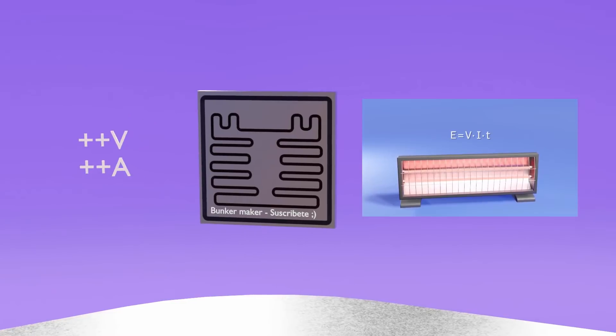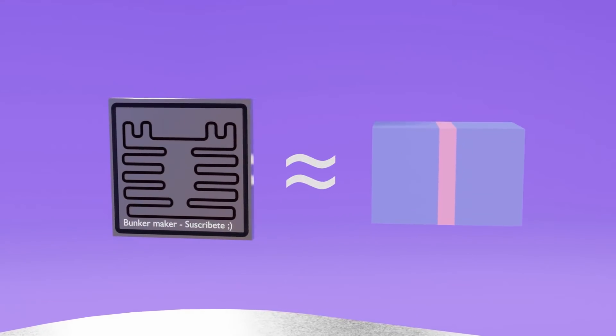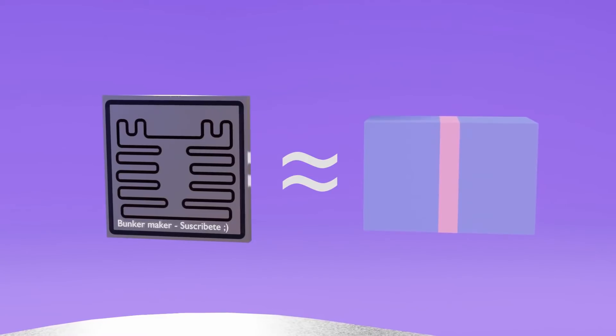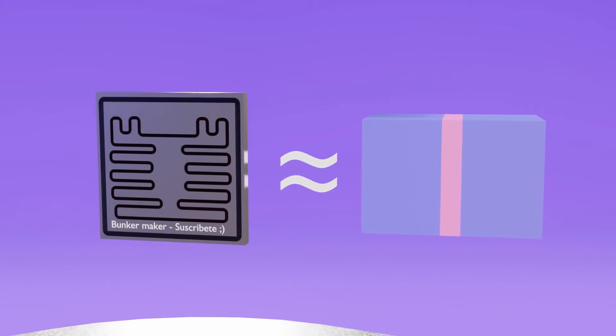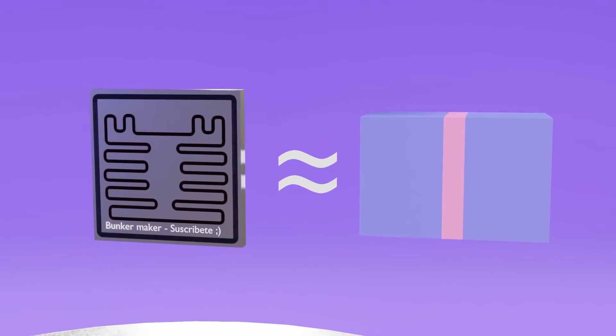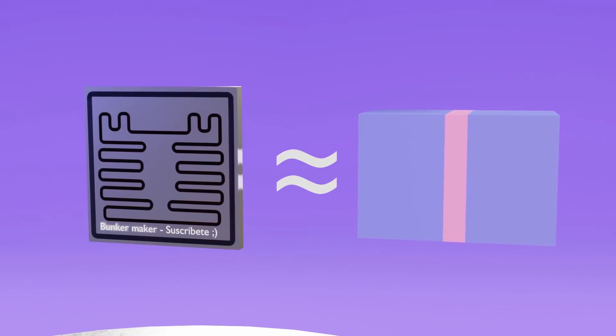And thirdly, the disposition of the internal elements of each transistor that I am going to show you will be only referential, because in reality they can have shapes a lot more complex, but the interaction between the elements should be the same or very similar.